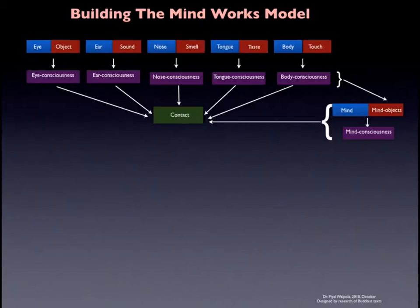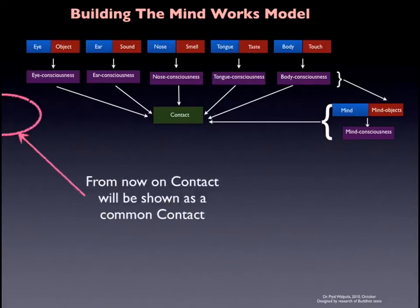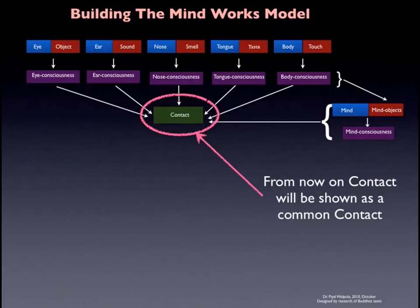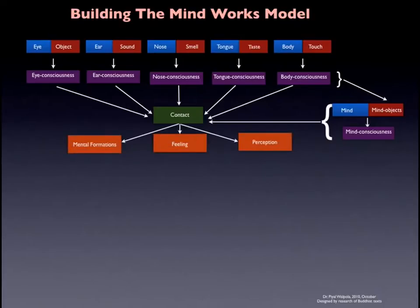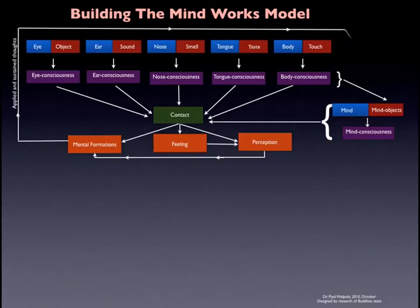Now let's start building our mindworks model. From this slide on, I will show contact as one contact, not as six contacts, to make the model less busy. From contact arise mental formations, feeling and perception. Feeling can influence perception, and perception in turn can influence mental formations. From mental formations — these are the thoughts — what's called applied and sustained thought can feed back into the mind as mind objects. In Pali this is called Vitaka Vichara.